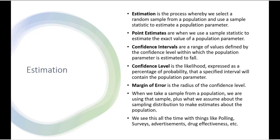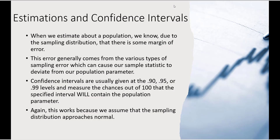That 44% is an estimate of the population parameter, which is unknown. So in reality, Biden's approval rating, if it's 44% plus or minus 4%, really falls in a range of 40% to 48%. So let's talk about this a little more.